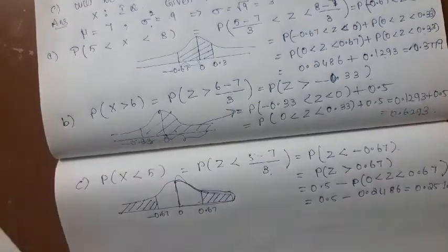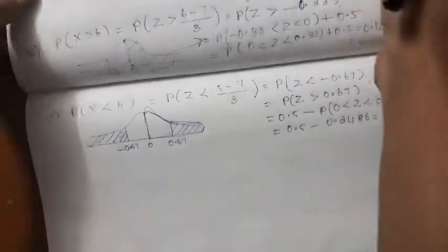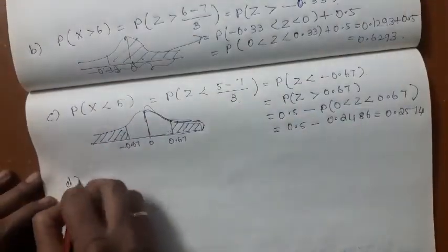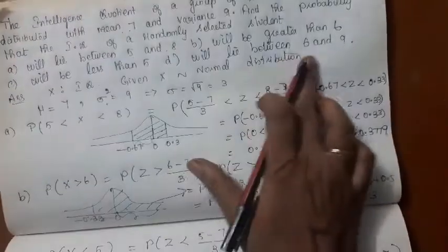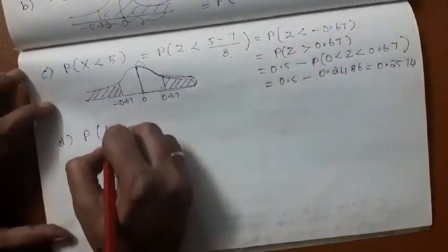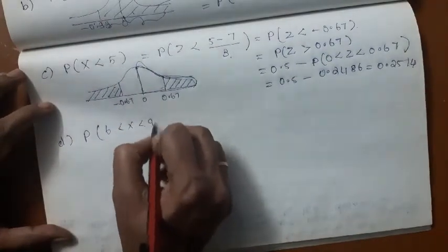When you reduce, you get 0.2514. Fine. The C is also over. We have one more problem. D. What is the probability that the IQ lies between 6 and 9? That is the last question.